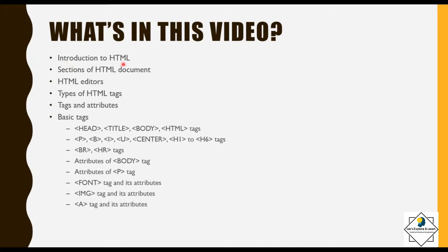Introduction to HTML. Sections of HTML document, HTML editors, types of HTML tags, tags and attributes, basic tags: head tag, title tag, body tag, HTML tag, paragraph tag, bold, italics and underline tag, center tag, heading tags H1 to H6, BR and HR tags, attributes of body tag, attributes of P tag, font tag and its attributes, image tag and its attributes, anchor tag and its attributes.